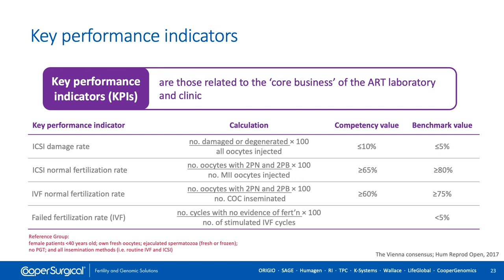The Vienna consensus suggests a reference group of female patients younger than 40, using their own fresh oocytes, only ejaculate sperm (fresh or frozen), no PGT, and all insemination methods. However, you must define the reference group for your specific lab. If your clinic specializes in severe male pathology with many testicular sperm biopsies, your reference group will differ from a clinic where the mean patient age is 32 years old.